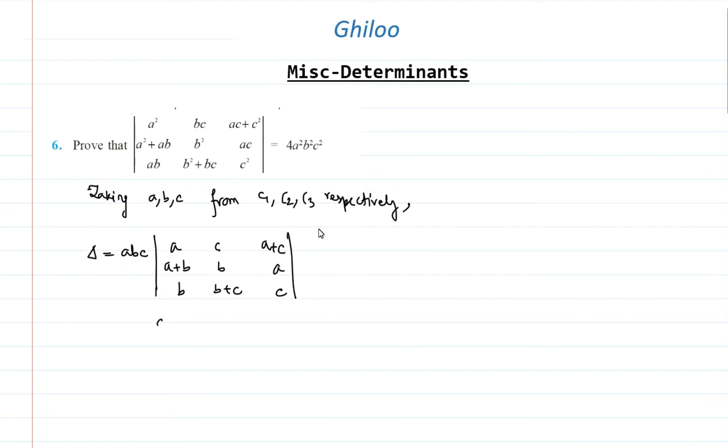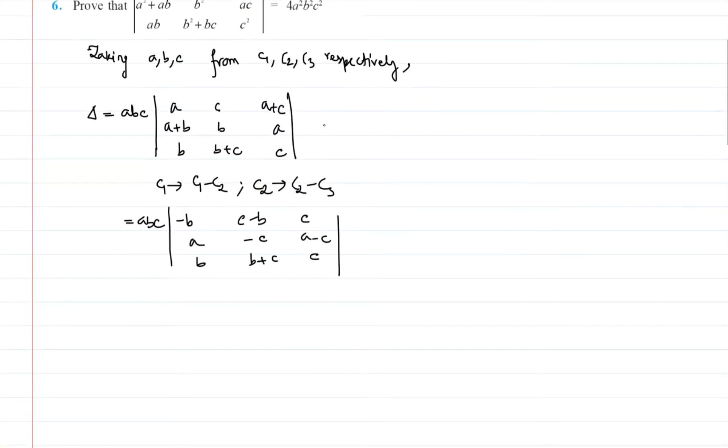So we turn c1 to c1 minus c2, and c2 to c2 minus c3. Hence it becomes minus b. Now what I'll do is I will transform r1 to r1 plus r3, and hence I'll be getting...